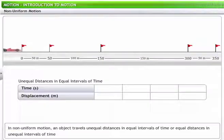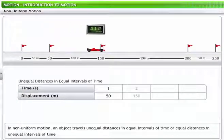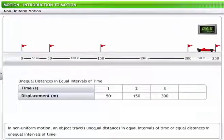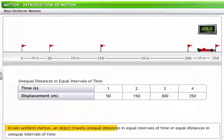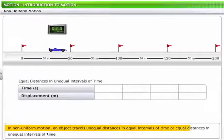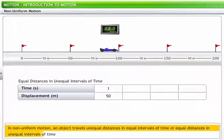Now let us observe the red car in the race and record how far it has moved from the starting line for each second of motion. We see that its displacement during any two consecutive seconds is not the same. This is non-uniform motion. An object is said to be in non-uniform motion if it travels unequal distances in equal intervals of time, or equal distances in unequal intervals of time.